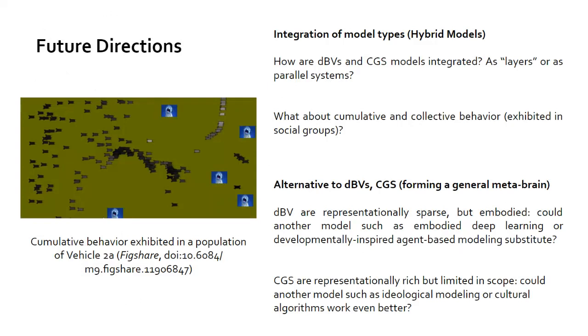Future directions: there are a number of future directions we're exploring. We're always looking at this integration of model types in the hybrid model. How are DBVs and CGS models integrated? As layers, as I showed in the first example, or as parallel systems where there's maybe a CGS layer on top of the entire Braitenberg vehicle, so that every node in the Braitenberg vehicle communicates directly with the CGS. That's something we haven't worked out yet, but this is something for future research.